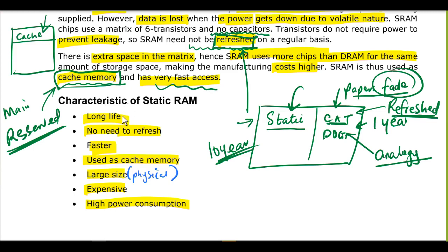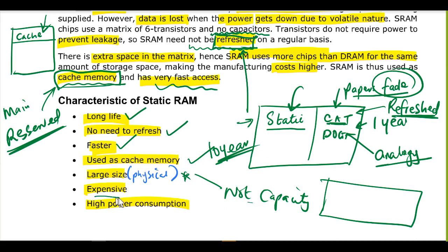So the characteristics of static RAM, it has long life. It is not required to be refreshed. It is very fast. It can be used as cache memory. It has large physical size. Notice here, we are not talking about capacity, but we're talking about the physical size. When you see it, it is very big because we are saying that it requires more electronic components to store than the dynamic kind of memory. So the other thing is, it's very expensive and it has very high power consumption.